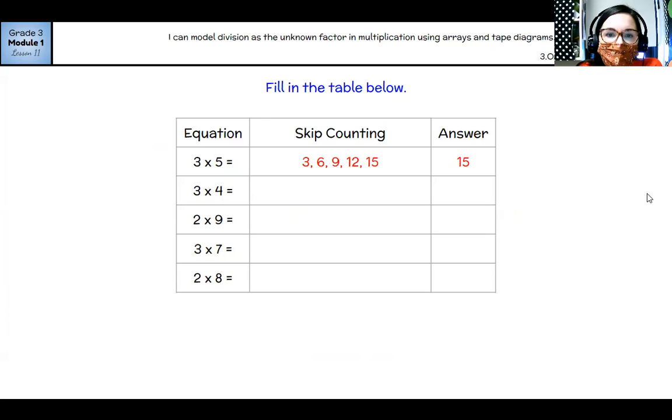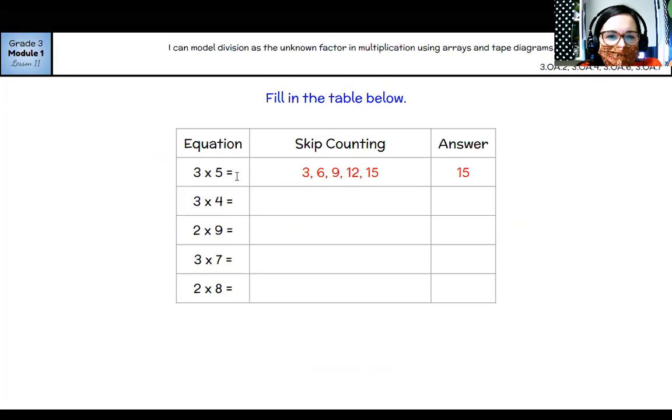All right, fill in the table below. So we're going to use some skip counting here to help us. So three times five. So that means we need five threes. Three, six, nine, 12, 15. And that gives us our answer, 15.